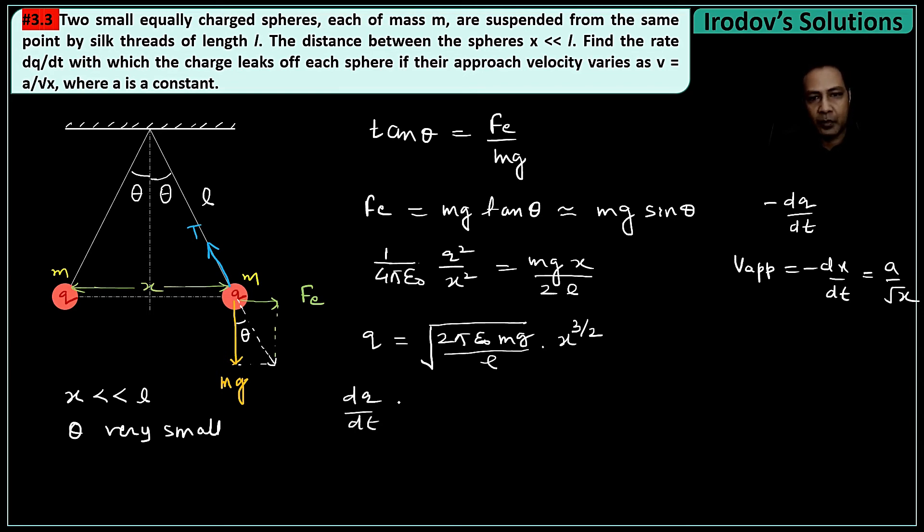So I am differentiating this with respect to time. dq/dt: this whole thing is a constant, so √(2πε₀mg/l), and this would give me (3/2)x^(1/2), and obviously dx/dt. If I put minus sign here, so minus sign also will come here, and this -dx/dt is a/√x.